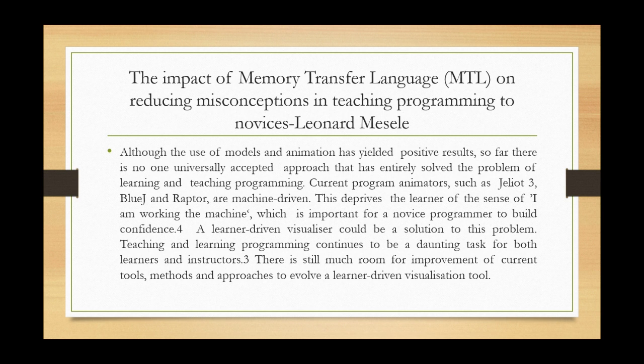This shows that different researchers and instructors have not yet come up with better ways to teach programming — this is the deficiency. As you can see, this problem statement has been well formulated and follows those three important parts: the topic, the problem, and the deficiency. The audiences — instructors and students — are implied throughout, even if not explicitly stated. All three parts have been covered clearly.